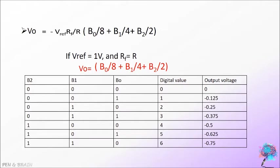Here we are representing the values of output voltages for each consecutive digital input. Looking at the consecutive output voltage values, an interesting fact is that they differ by a certain fixed value — in this case, a difference of 0.125 between each output voltage.